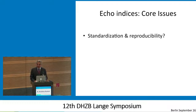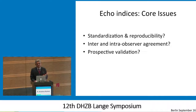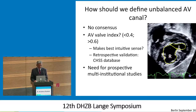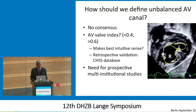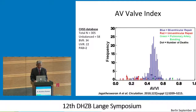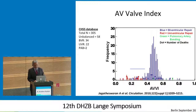You need inter- and intra-observer agreement to be tested, and then prospective validation with robust outcome measures. That's very hard — there is no consensus. What we have is AV valve index, and this index probably makes the most intuitive sense. There is very good retrospective validation with the CHHS database — 300-plus patients — but there is a need for prospective multi-institutional studies.